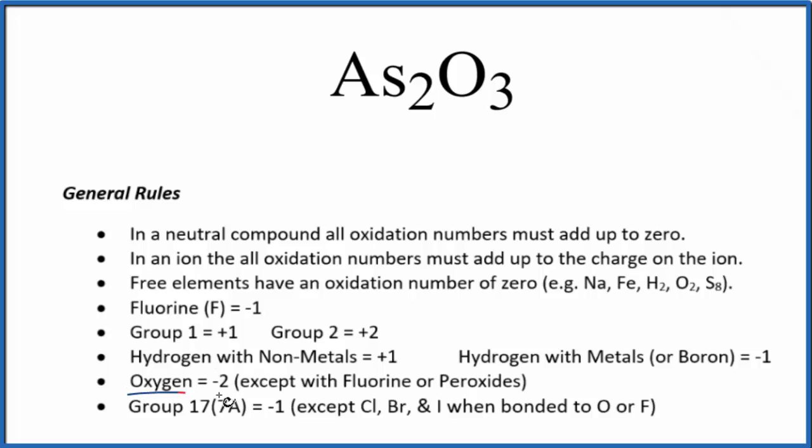We know oxygen is going to be minus two with just a few exceptions. So if the oxygen is minus two, each one of these three oxygens has an oxidation number of minus two.